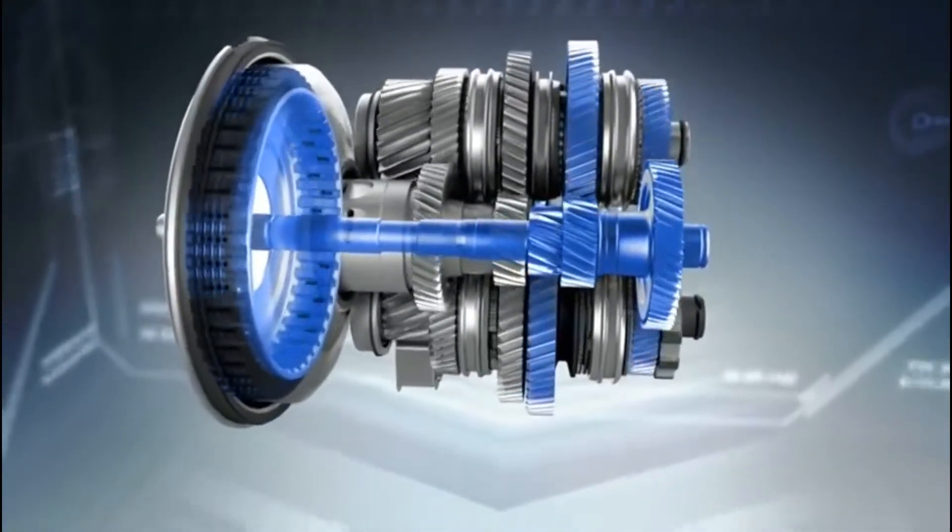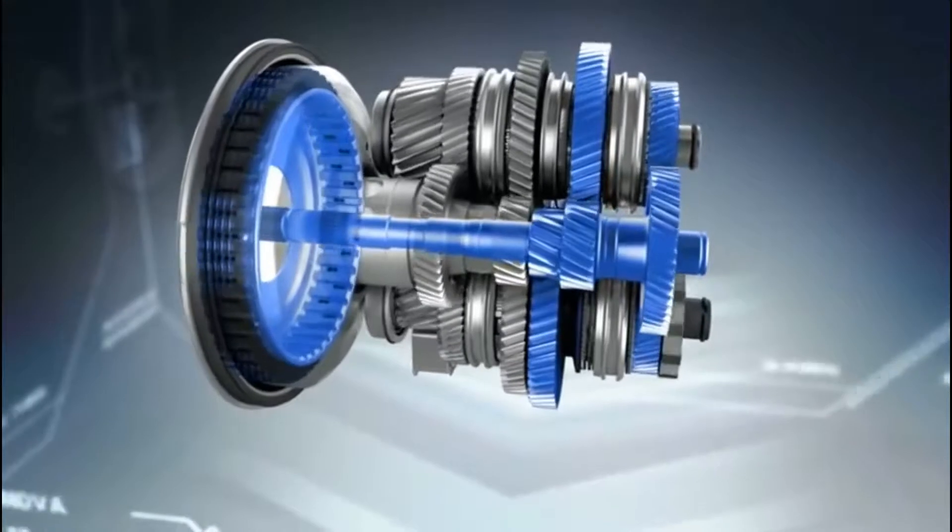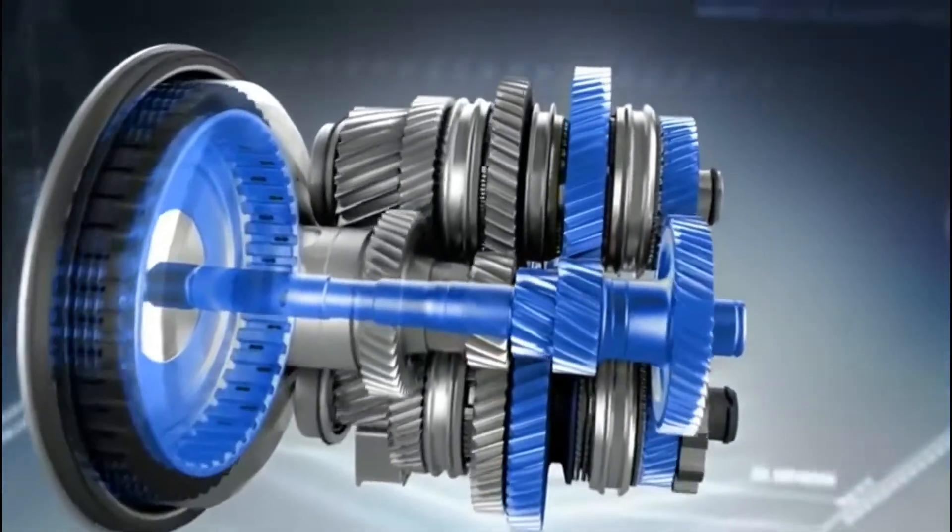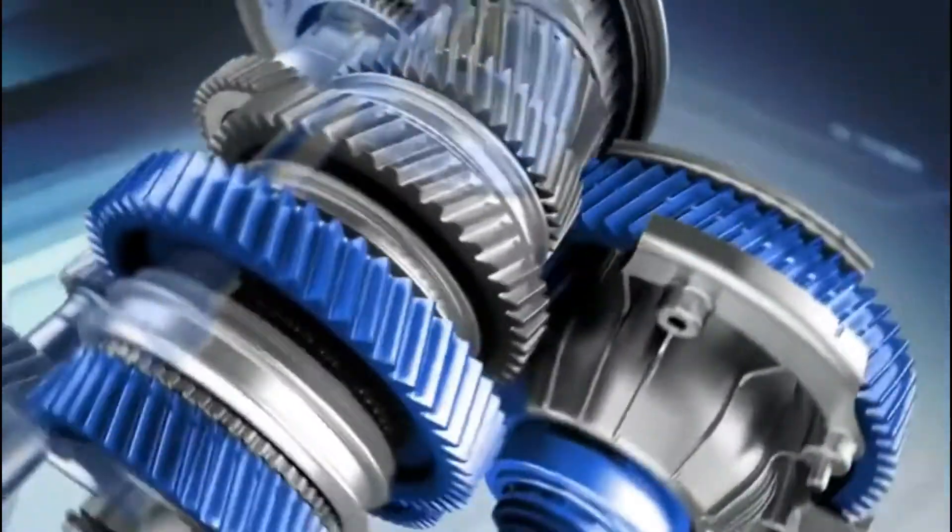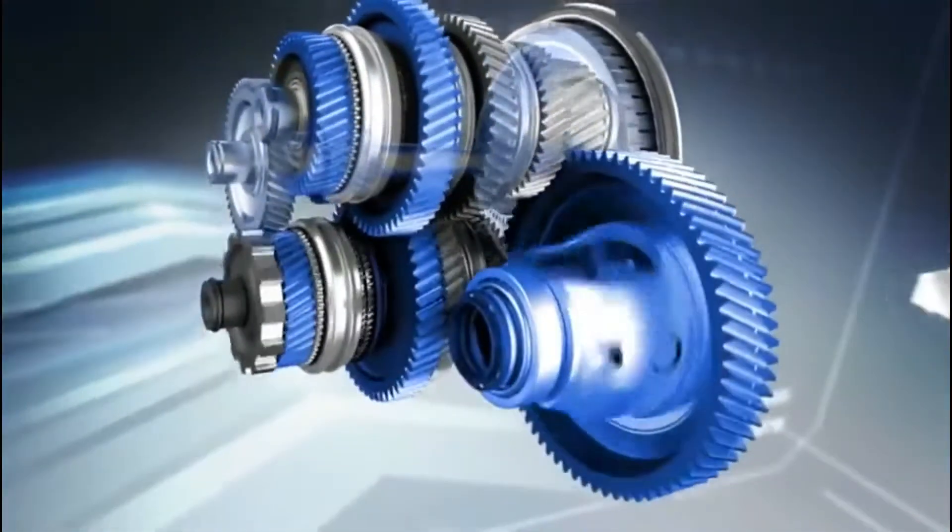The outer clutch transfers the engine torque to the gear pairs of the odd number gears via the solid shaft, and from there to the differential gears and ultimately to the wheels via the respective driveshaft.